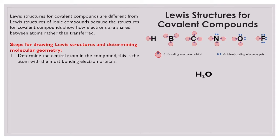Fluorine and all the halogens are capable of forming one bond. Oxygen and non-metals in oxygen's family are capable of forming two covalent bonds. Nitrogen and non-metals in nitrogen's family are capable of forming three covalent bonds. Carbon and silicon in its family are capable of forming four covalent bonds. Boron is capable of forming three covalent bonds and has no non-bonding electron pairs, and the same is true for carbon. Hydrogen has one valence electron and can form one covalent bond.